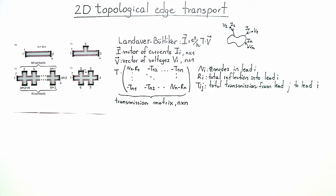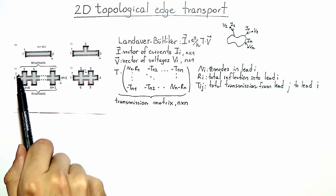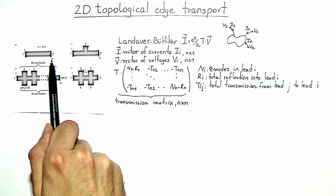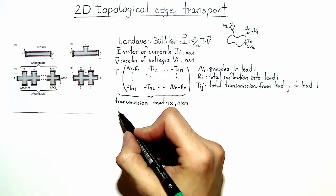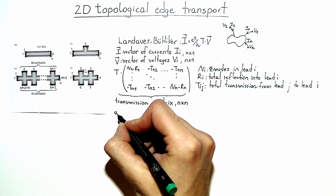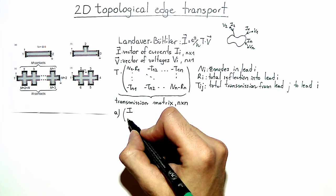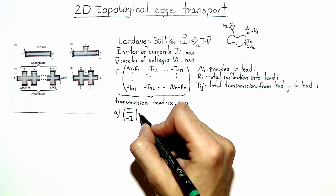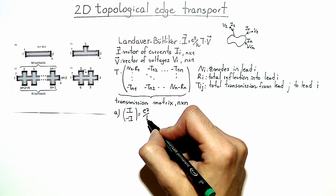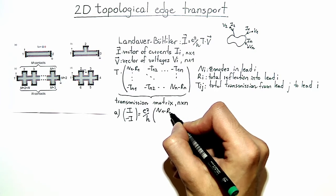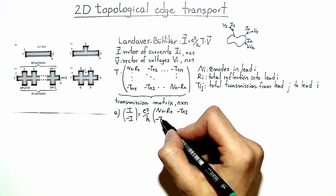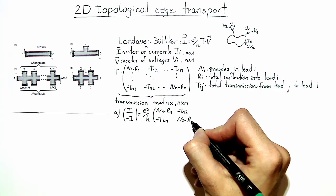Let's apply the Landauer-Büttiker formalism to the device geometry in figure A. In this case we have a two-terminal device, so N equals 2. We assume that we inject the current in contact 1, as denoted by this little triangle, and that we ground contact 2. Therefore we write the current vector—containing the current in contacts 1 and 2—as equal to the conductance quantum times the transmission matrix times the voltage vector. T is a 2-by-2 matrix.